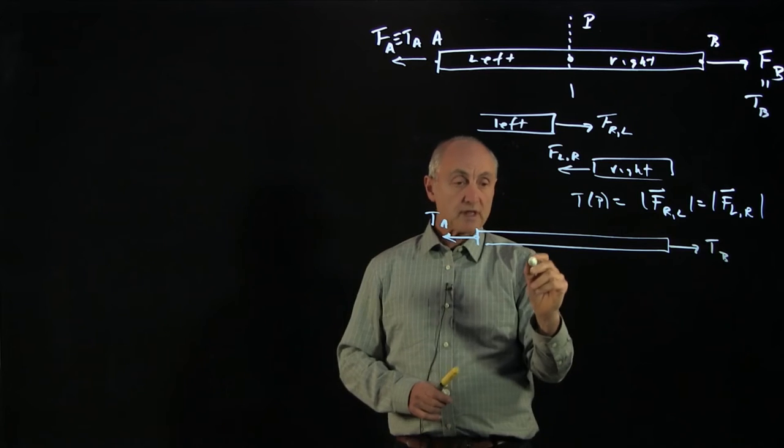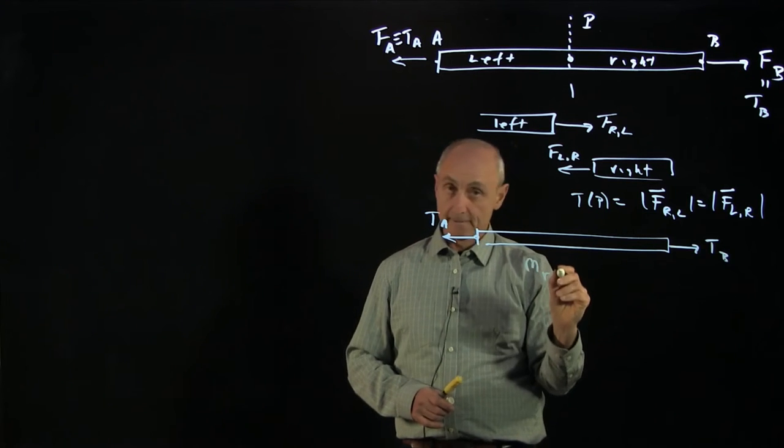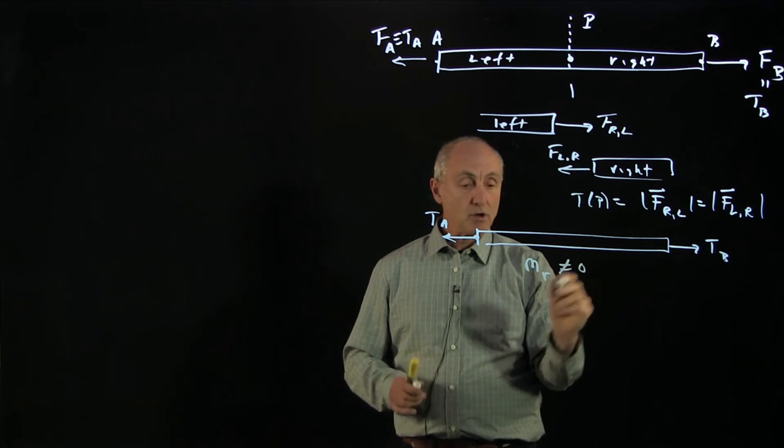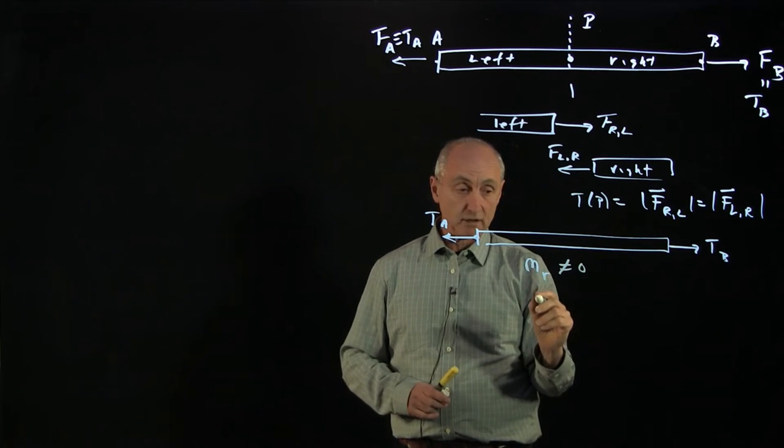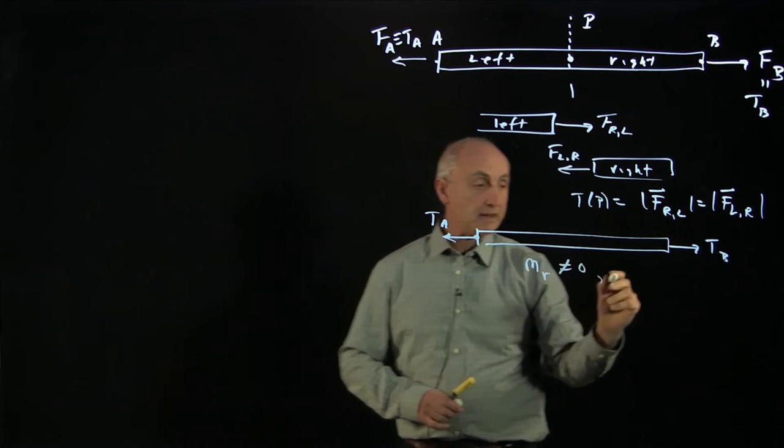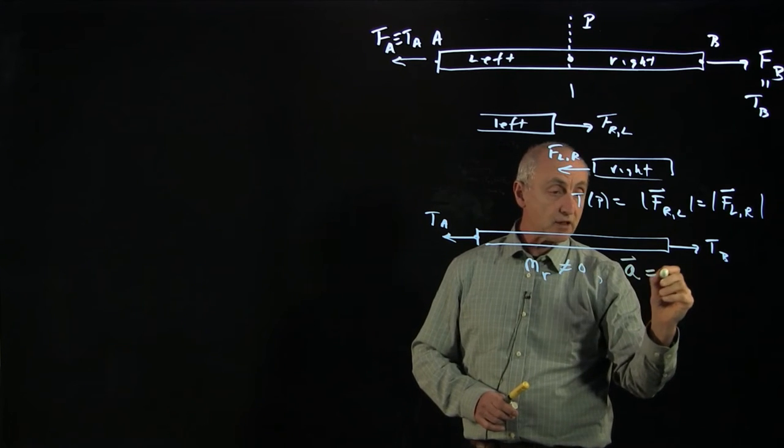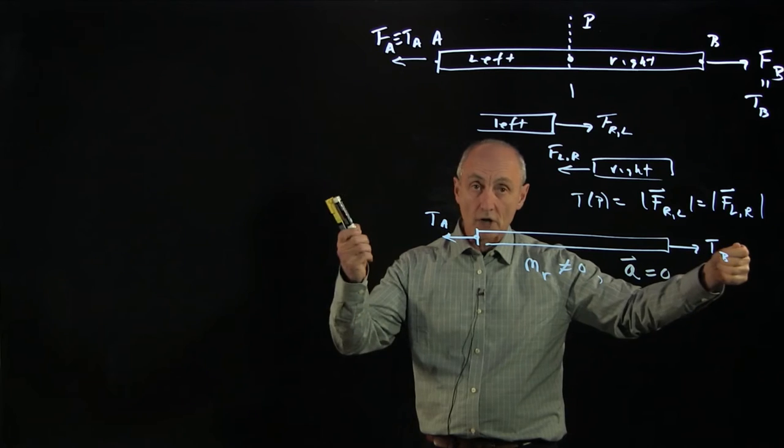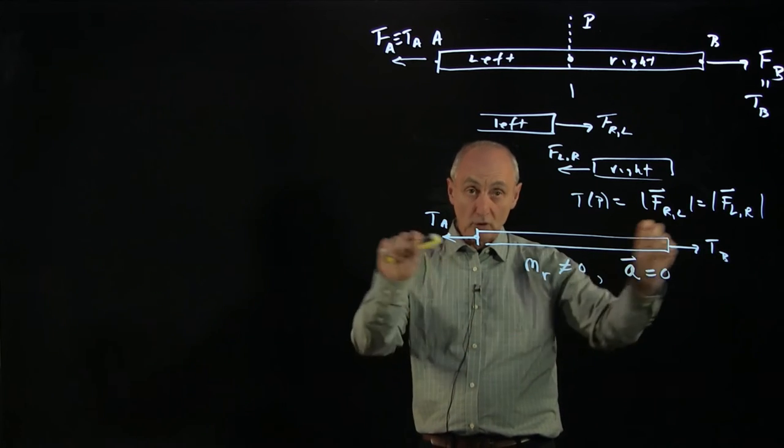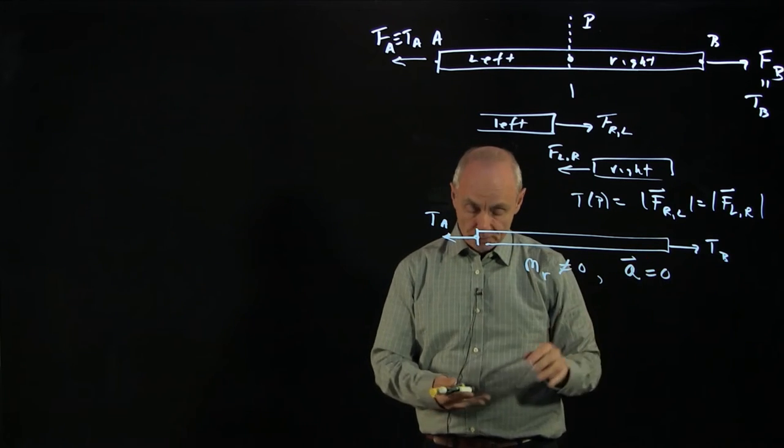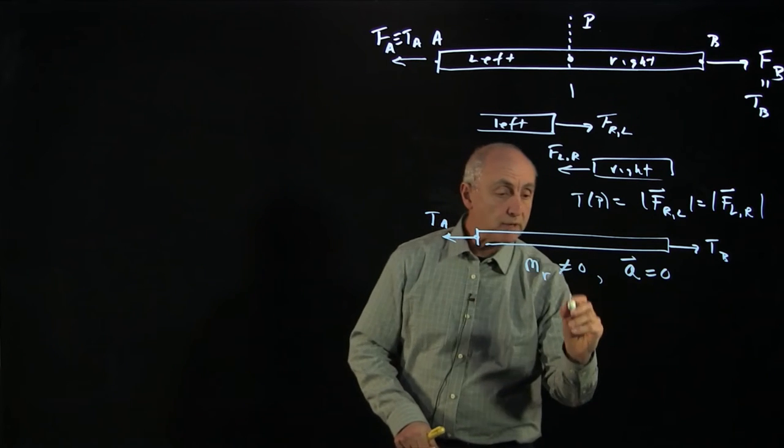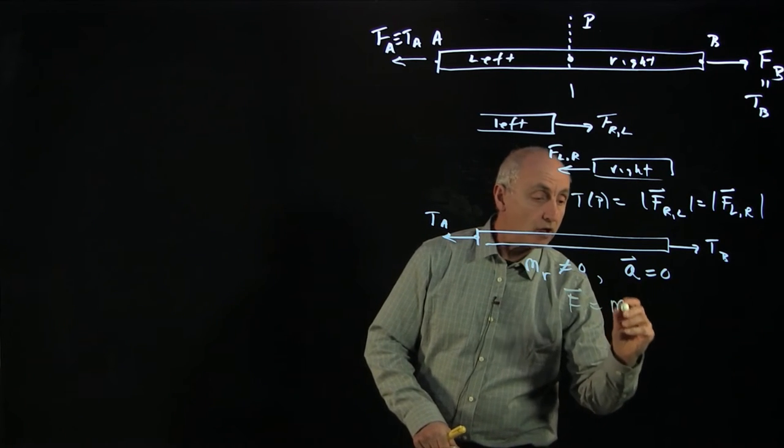Now suppose that our mass of the rope is non-zero. And we now want to apply Newton's second law. But let's also apply the condition that the acceleration of the rope is zero. So you're holding the rope under some tension by pulling both sides, but the rope is not accelerating.